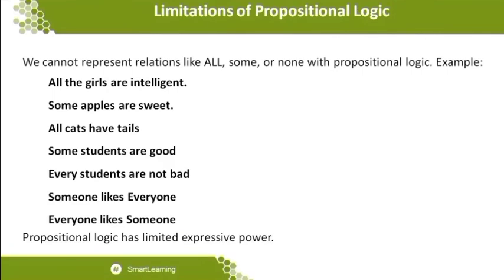Some students are good — what is the number of 'some'? It may be two, four, six, seven, whatever. When these limitations exist in proposition logic, there are connectivity representations that satisfy these limitations. Proposition logic is taken as the initial part because, using proposition logic statements, we will go forward to satisfy these limitations. For example, for 'everyone likes someone' — the system needs mathematical logical connectives to represent everyone and someone.